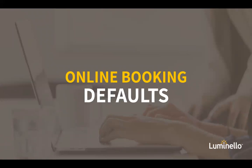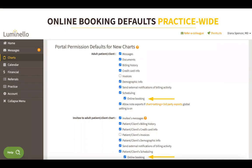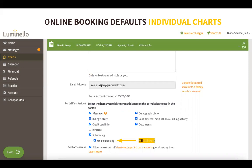Online booking defaults. In this section, we will review the different ways you can enable online booking for your patients — individually for each patient, or practice-wide for all patients. To enable online booking practice-wide, go to your charts menu and click on settings. Scroll down to portal permission defaults for new charts and make sure that the online booking box is checked. If you wish to set up online booking for patients individually, go to the patient's chart, click on profile, scroll down to portal permissions, and click on online booking to enable it for that particular patient.